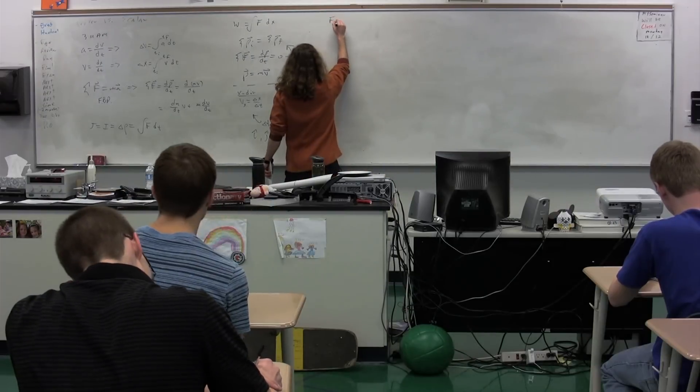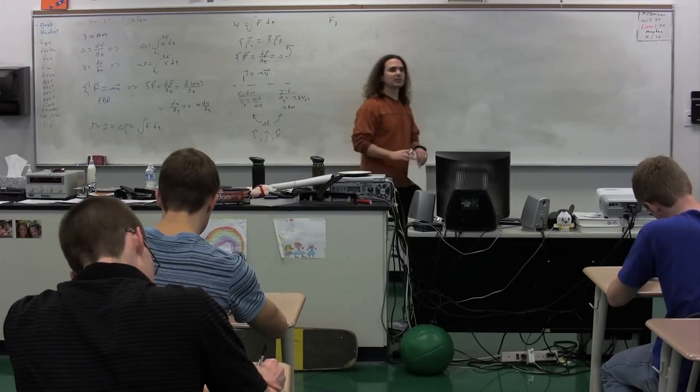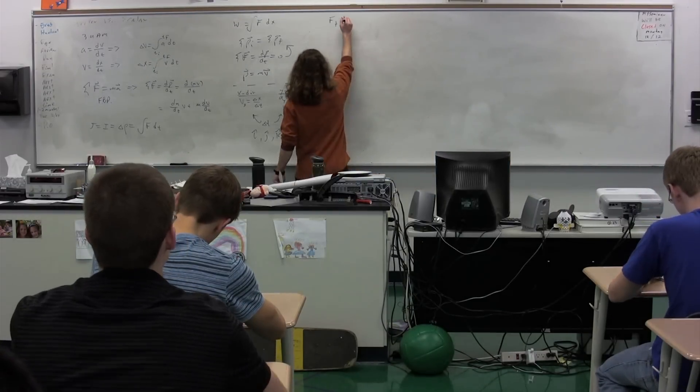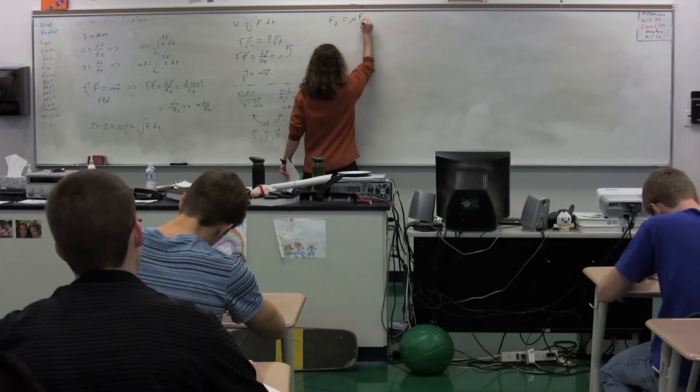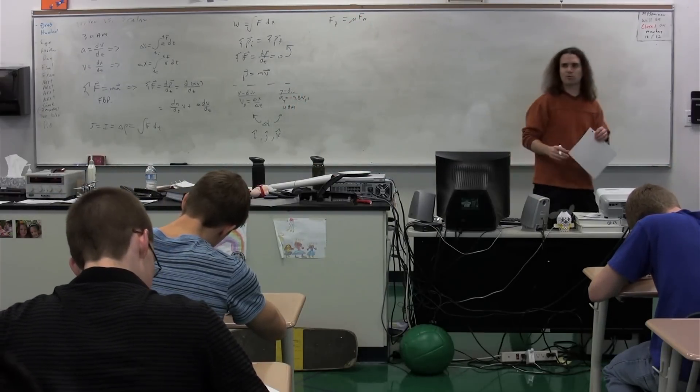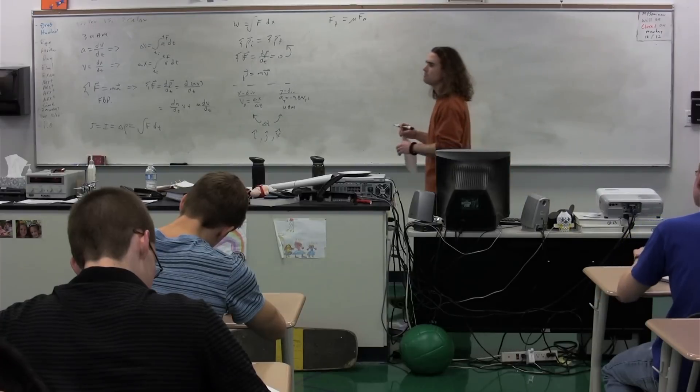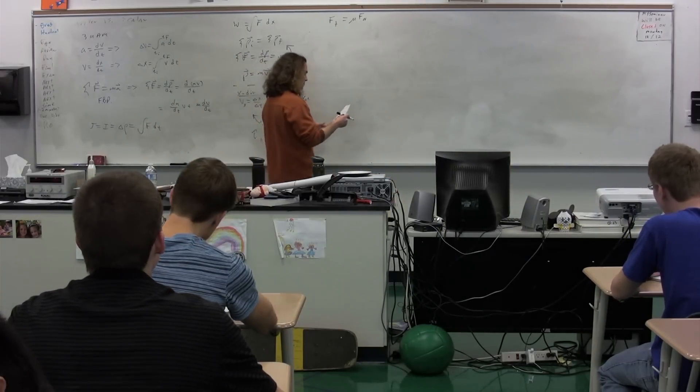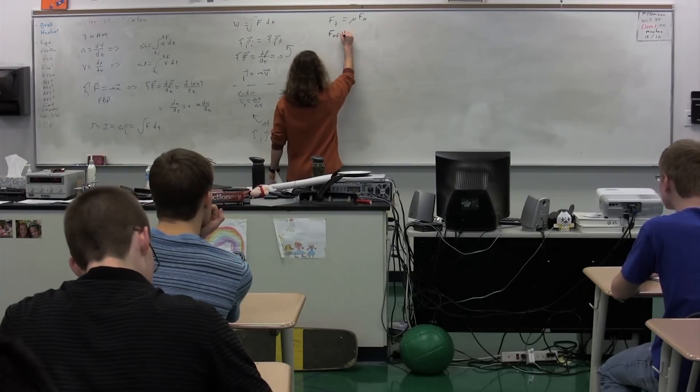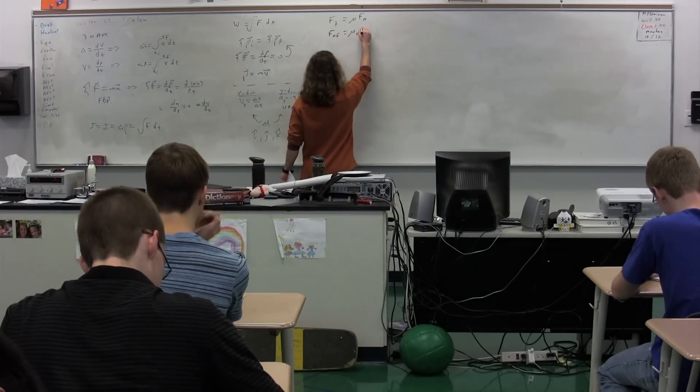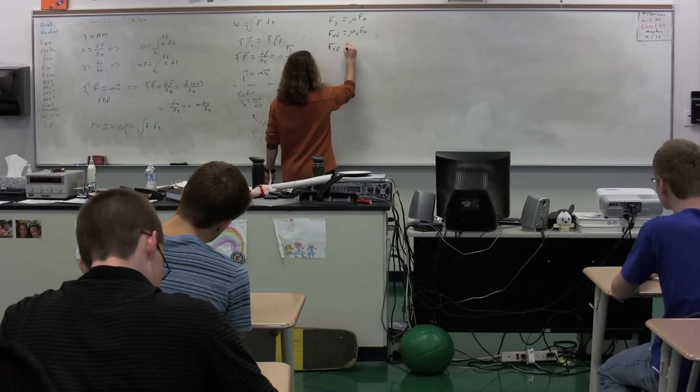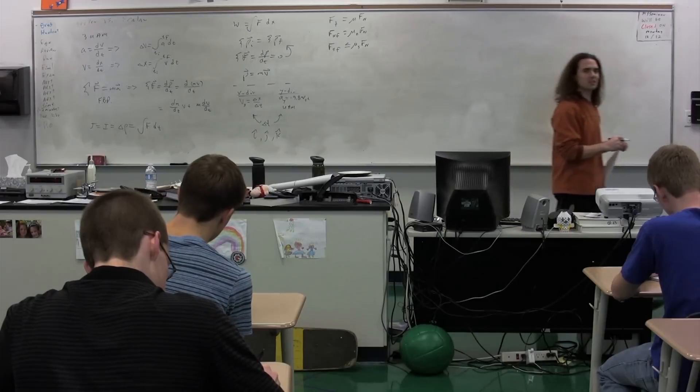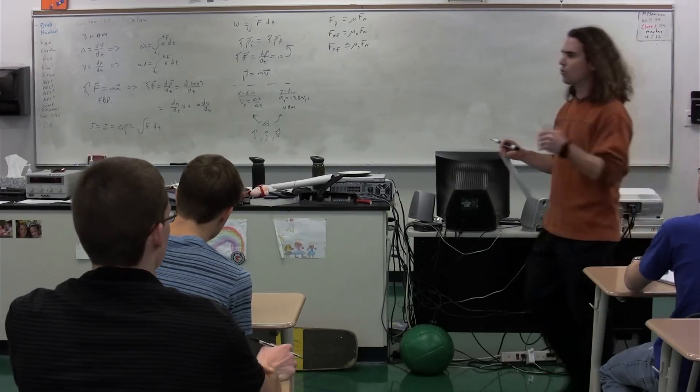The force of friction. We have two different kinds of friction. They are what, Mill? Static and kinetic friction. So the general equation is that the force of friction equals mu times the force normal. What are the dimensions on mu, Hamza? There are no dimensions on mu. It is a coefficient. Therefore, we can get from here that the force of kinetic friction is equal to mu k times force normal. But for the force of static friction, it's less than or equal to mu s times force normal.